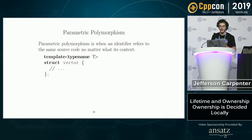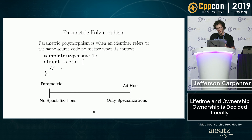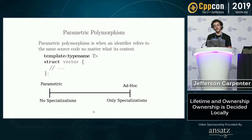Parametric polymorphism is when you have the same source code up to a substitution. So in template<typename T> vector, the source code of vector is the same for all T up to a substitution. But as we all know, there is vector<bool>. Templates are not exactly parametric polymorphism — there's a degree of variation. If there are no specializations at all, then it's parametric. If it's only specializations, then it's ad hoc.